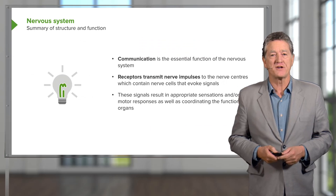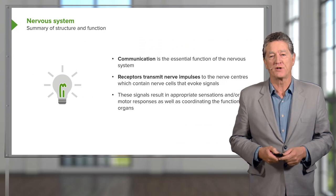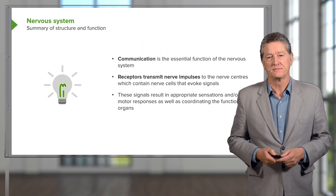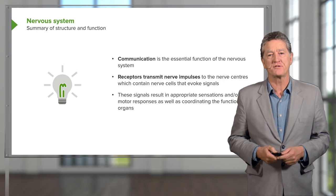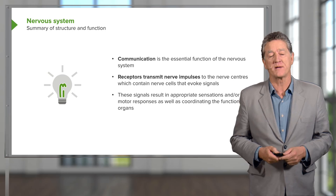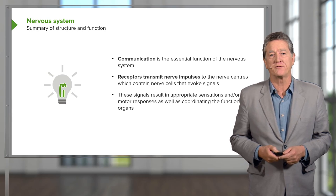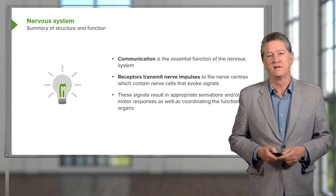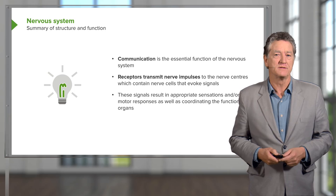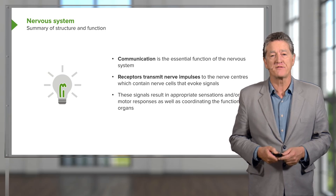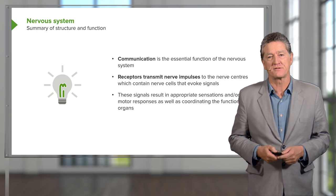The main function of the nervous system is communication. We have special sensory neurons that perceive information from the periphery, from our internal organs, and send that information into the brain to be processed.